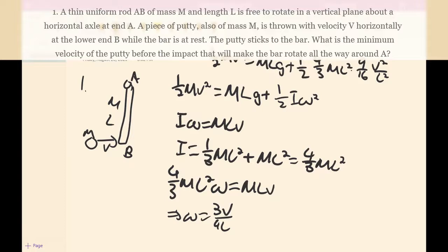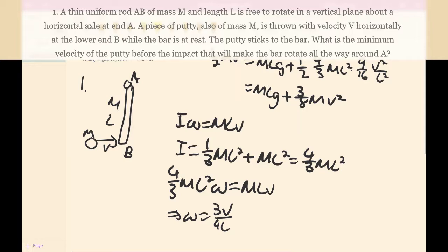Okay, so then we erase some stuff and then we can get that this is of course equal to MLg plus 1/2 of this, and so we get 3/8 MV squared. So then, now it's pretty simple from here. We get 1/8 MV squared is equal to MLg, so then obviously V is just equal to square root 8Lg.